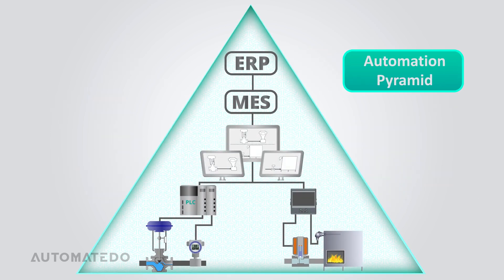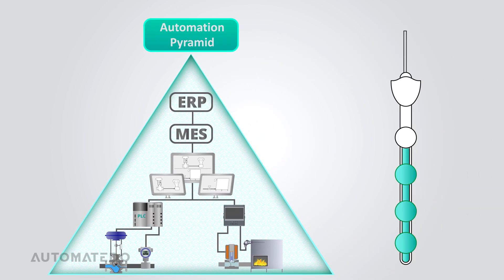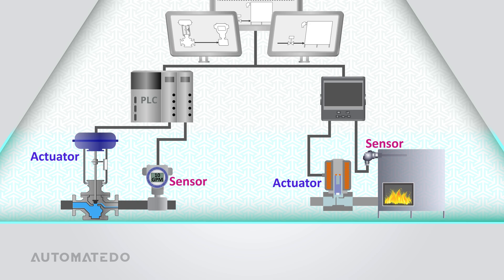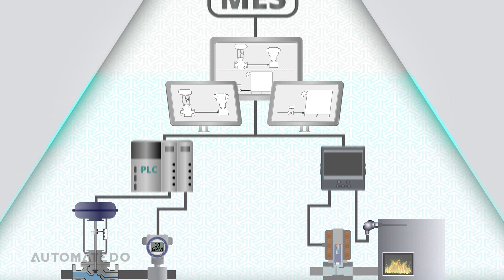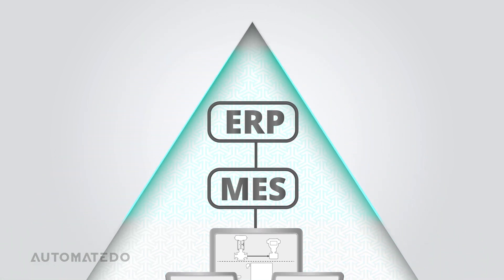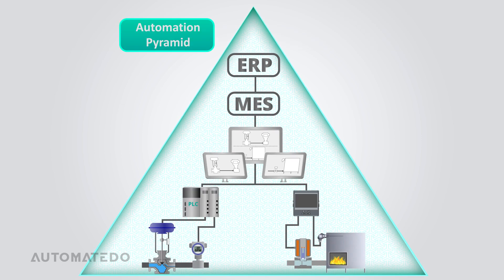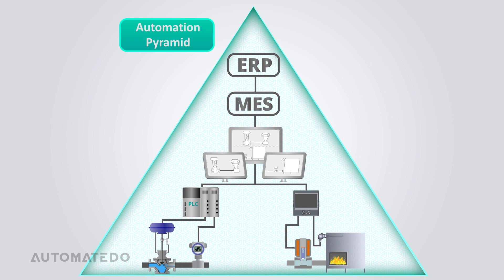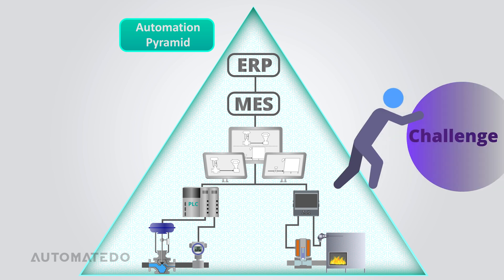Enter the Automation Pyramid, a model inspired by the ISA-95 standard that organizes automation systems across all levels of manufacturing. In this video, you will learn the automation pyramid step by step — how sensors and actuators form the foundation, how controllers and SCADA systems bring intelligence, how MES and ERP systems tie it all together, the networks and protocols enabling communication, timing differences in data flow, and common challenges engineers encounter.